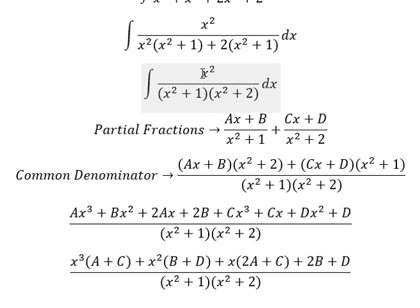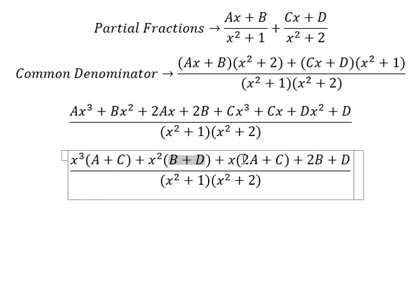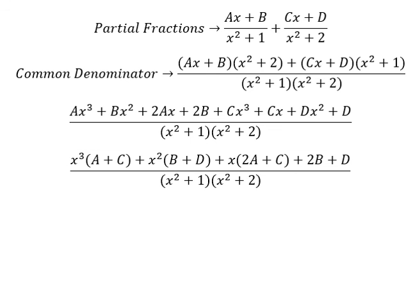If we look carefully, we have only x squared, which means (B + D) equals one. The coefficients for x to the power of three, x, and the constant term equal zero because we don't have those terms in the original expression. So we set up the system of equations.